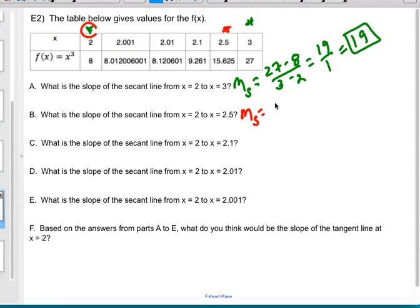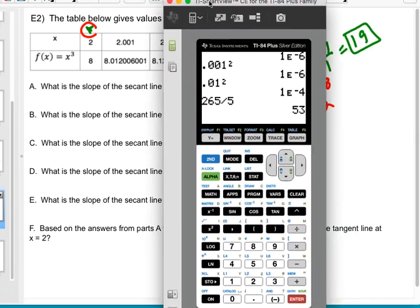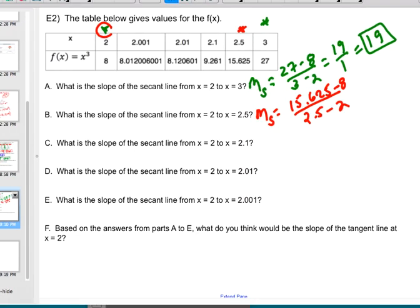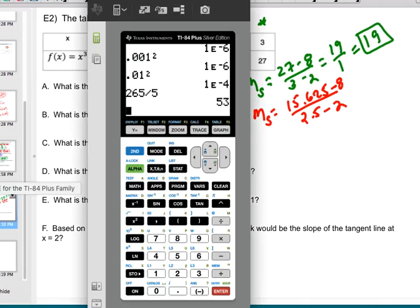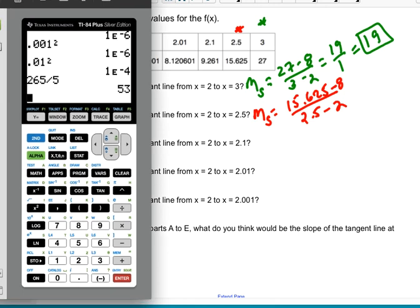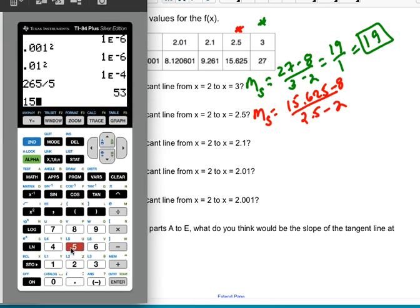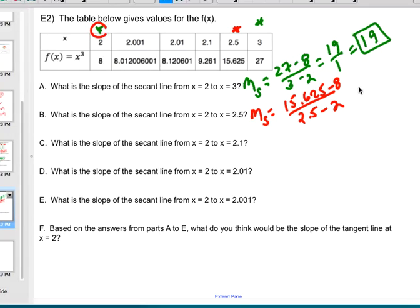So now my secant slope is going to be 15.625 minus the 8 over the 2.5 minus the 2. Now I don't really feel like doing that by hand, so I'm going to go ahead and bring this guy over here for a sec. So let's do 15.625 minus 8. And then I'm going to go ahead and just divide by 0.5 because I can do that bottom in my head and I get a 15.25. So 15.25 is the slope as I move a little closer.